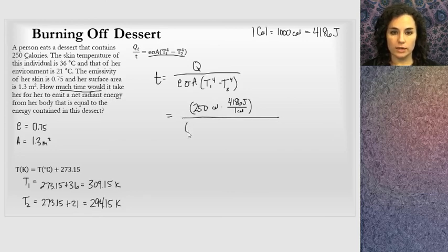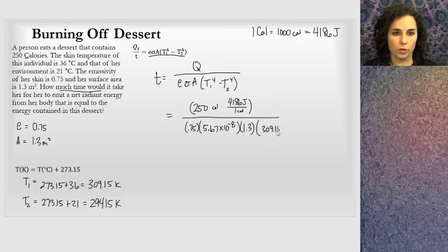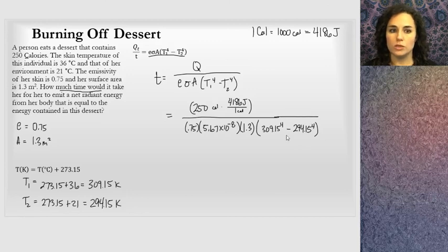I'm going to divide by all the quantities down here. I have 0.75 for the emissivity. Sigma is the Stefan-Boltzmann constant, 5.67 times 10 to the negative 8. The area is 1.3. Then I'm going to include these temperatures in this expression: 309.15 to the fourth power minus 294.15 to the fourth power. Please note and don't do this: that is not the same as 309 minus 294 quantity to the fourth power. Those are not the same thing.